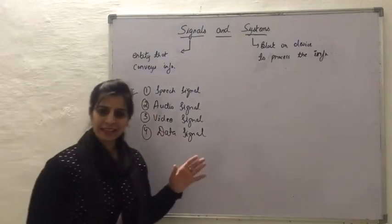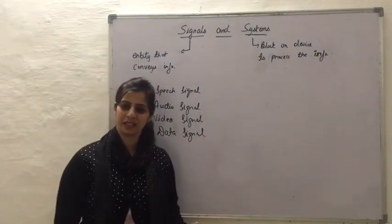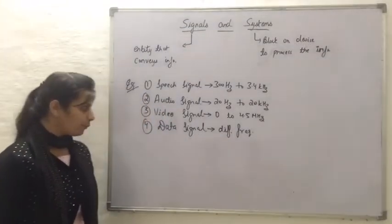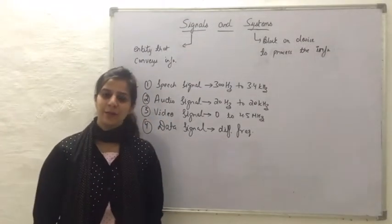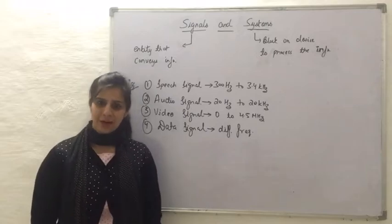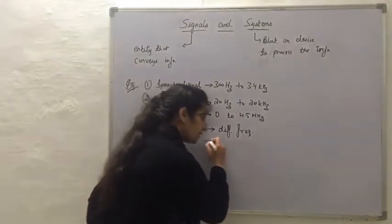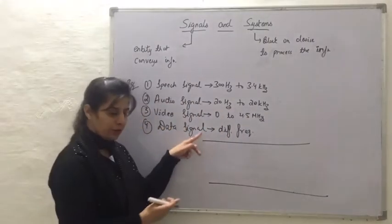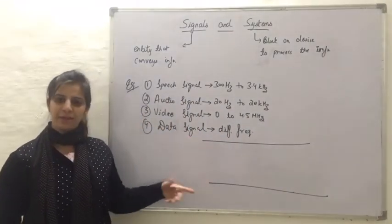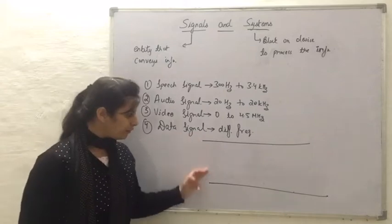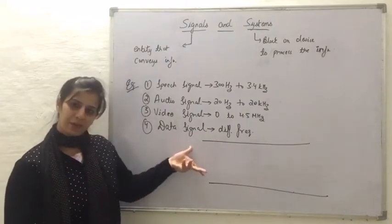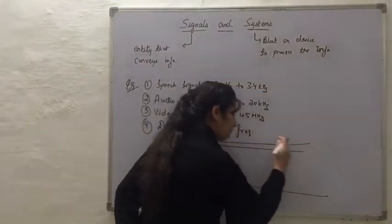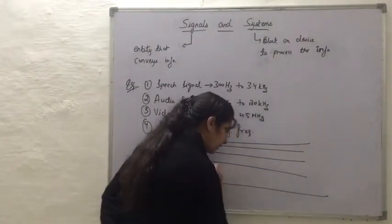All these signals occupy different frequency ranges. For those of you who do not understand the meaning of frequency, we can think of the total frequency spectrum as a road. So this is the total frequency spectrum that we have. This total frequency band or spectrum will have different frequencies — we can call them as lanes. So we have a road that has got different lanes.